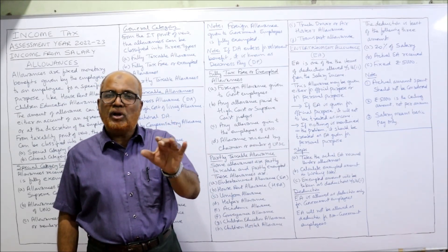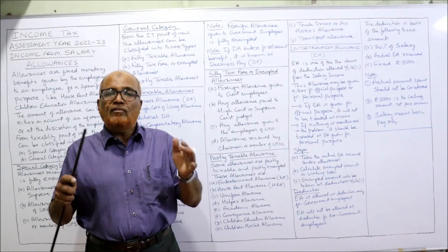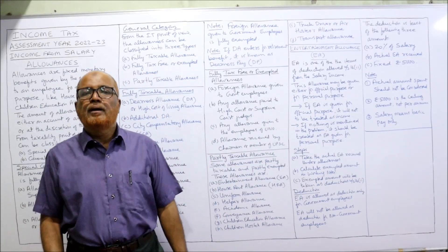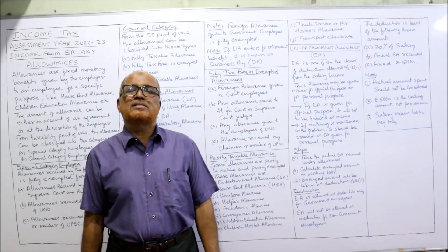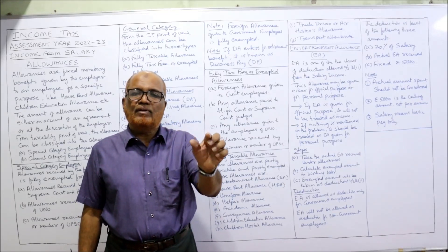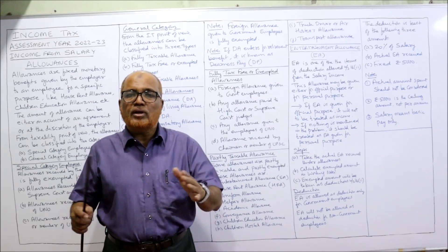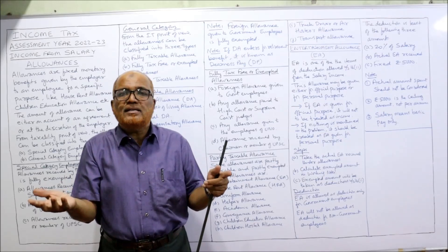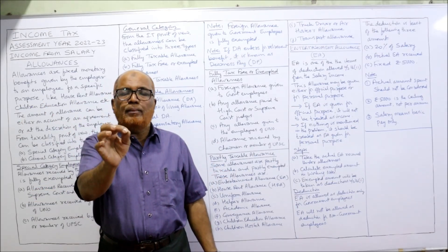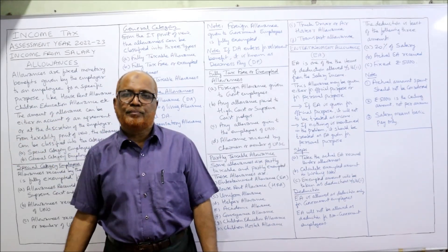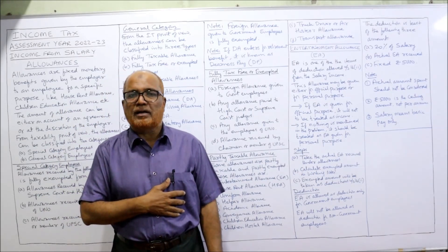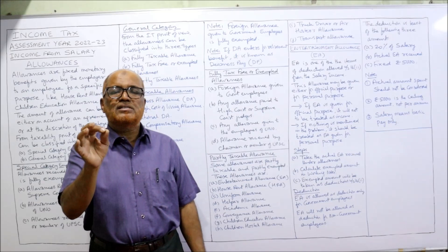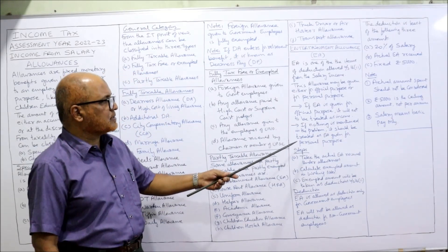Next, check whether the EA deduction is eligible — apply the provisions. If the deduction is allowed, take it under Section 16(2). Important: EA may be given either for official purpose or personal purpose. If in the problem EA is given for official purpose, treat it as not an income — it is not taxable. Write in the working note: 'Allowance given for official purpose is not taxable.' If given for personal purpose, it is partly taxable and partly exempted. If nothing is mentioned, assume the allowance is given for personal purpose.